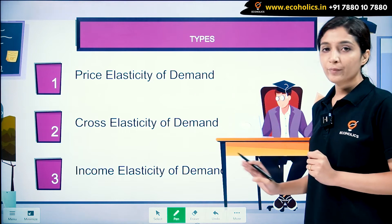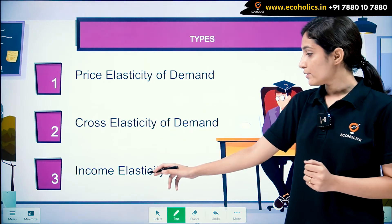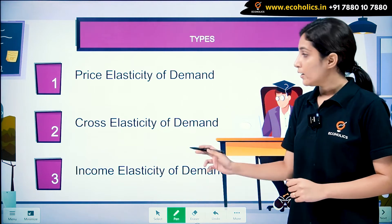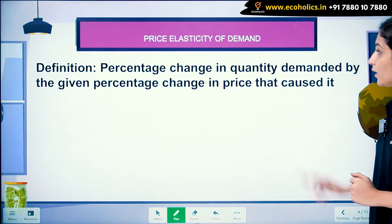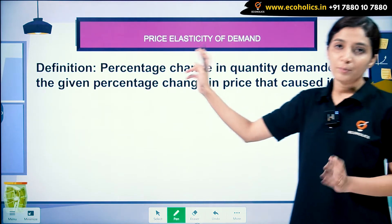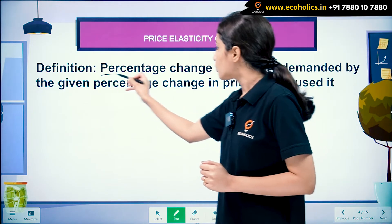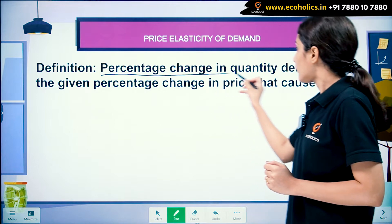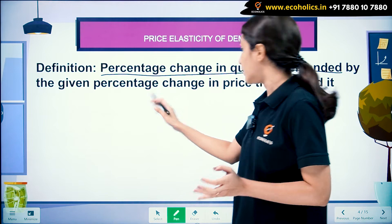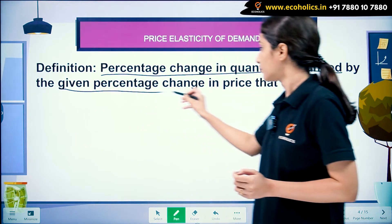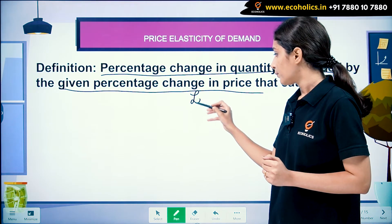There are three types of elasticity of demand. First is price elasticity of demand, second is cross elasticity of demand, and third is income elasticity of demand. We are going to look at them one by one. Price elasticity of demand is the percentage change in quantity demanded because of a percentage change in price.